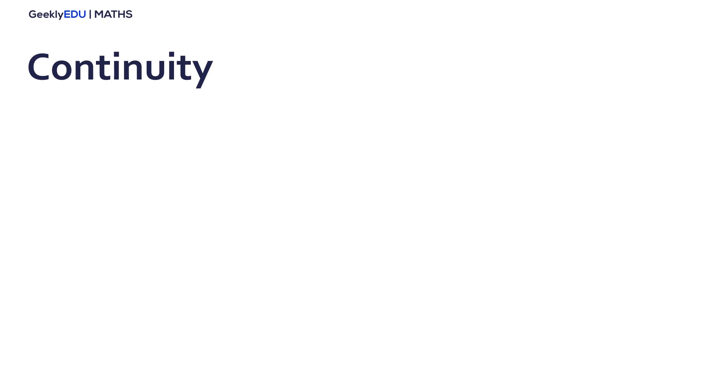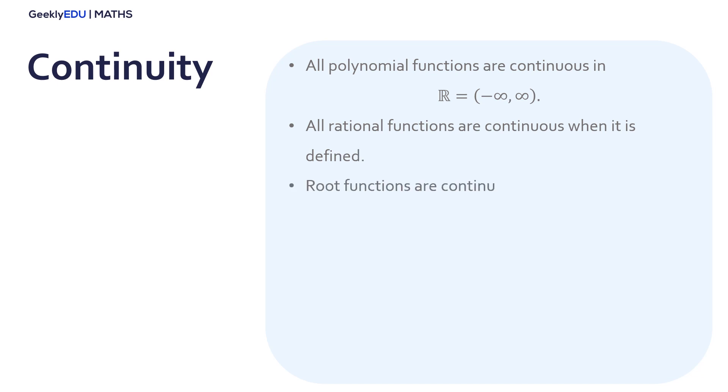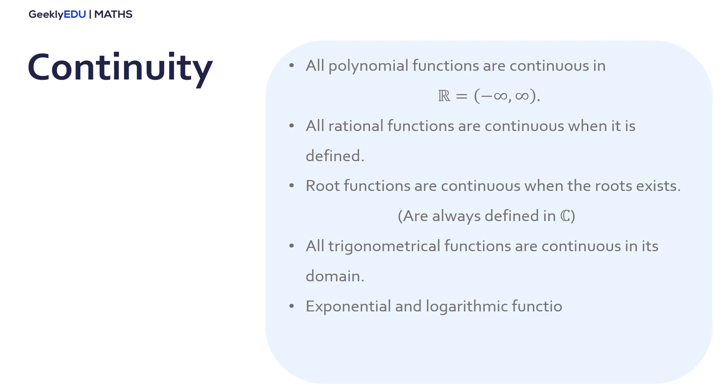Some theorems that you should keep in mind are these. All polynomial functions are continuous in all real numbers. All rational functions are continuous when the function is defined. This means that the denominator is different to 0. Root functions are continuous when the roots exist. Remember that not all roots are real, so you should be careful if you are working only with real numbers, because these functions are defined when the roots are real bigger than 0. Otherwise, the roots are always defined in complex numbers. Another theorem is that all trigonometrical functions are continuous in its domains. Remember that the domain is not always the real numbers. For example, for the function tangent, it is defined in its domain, but for some values of x is not defined.